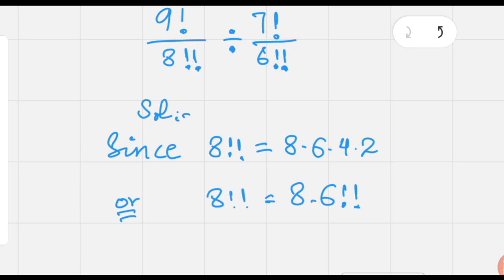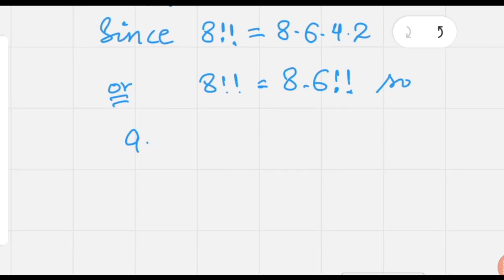Now using double factorial of 8 in the above simplification, that is 9 factorial over 8 double factorial divided by 7 factorial over 6 double factorial.